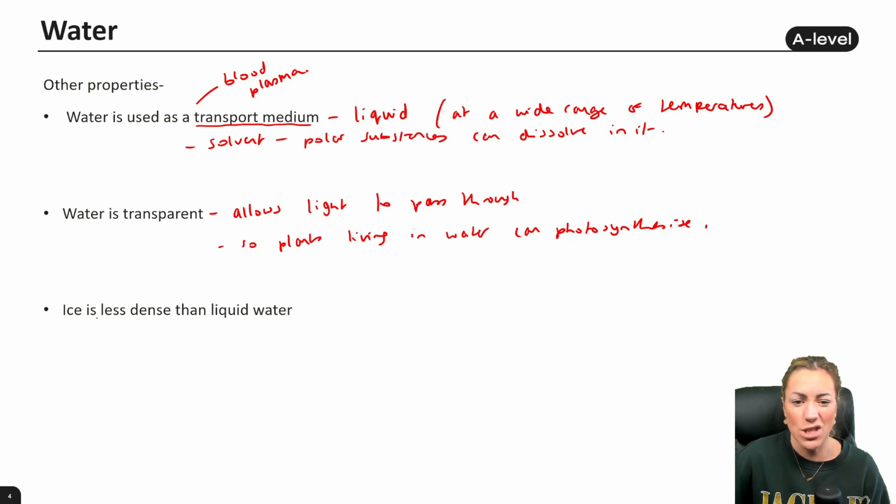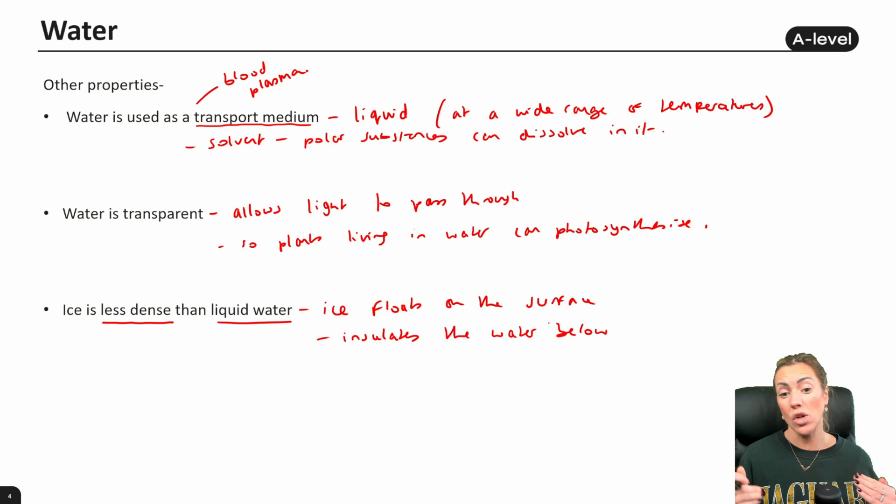Finally, ice, which is obviously solid water, is less dense than liquid water. Now this means that ice floats on the surface, and that is an advantage because it insulates the water below, which basically means aquatic organisms can live in that water without the temperature of that water dropping too low, because the ice being less dense will be on the surface, and it will provide a layer of insulation to the liquid water below.